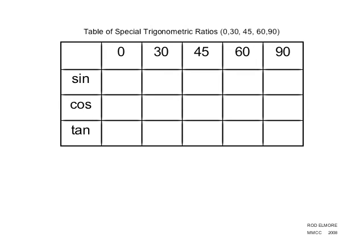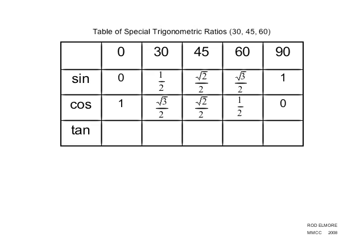Now we'll put the values in a table for easier memorization. The table covers special trigonometric ratios for 0°, 30°, 45°, 60°, and 90° across the top — using degrees since we're more familiar with them — and sine, cosine, and tangent in the left column. Sine of 0° is 0 and sine of 90° is 1, with the others from our list. Cosine of 0° is 1 and cosine of 90° is 0 — just the opposite of sine. Tangent of 0° is 0 and tangent of 90° is undefined, with the tangent of 30°, 45°, and 60° filled in from earlier.